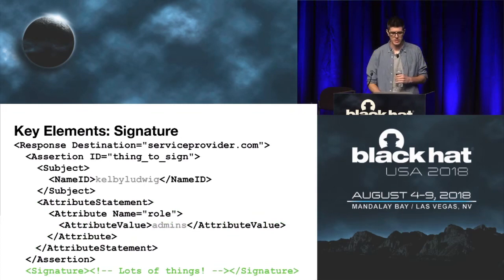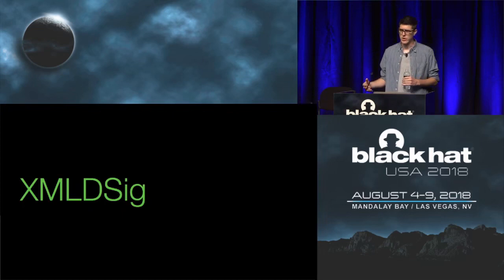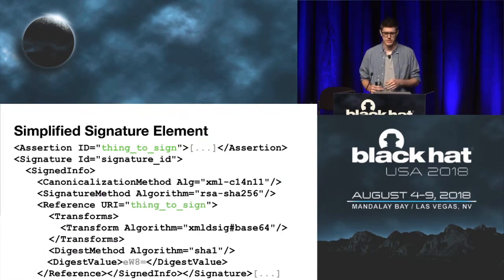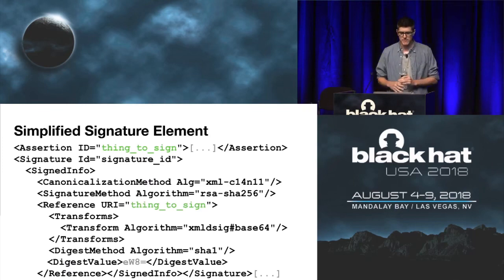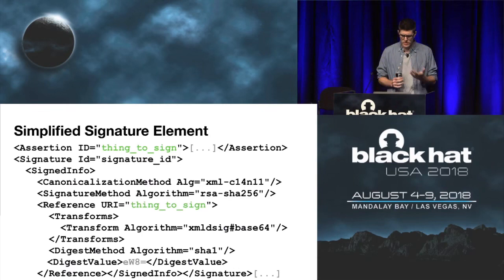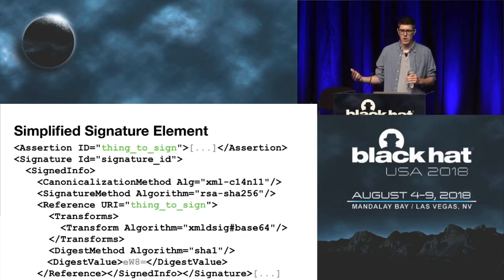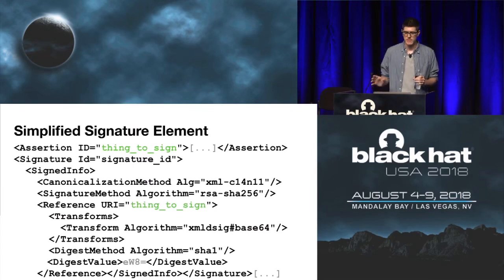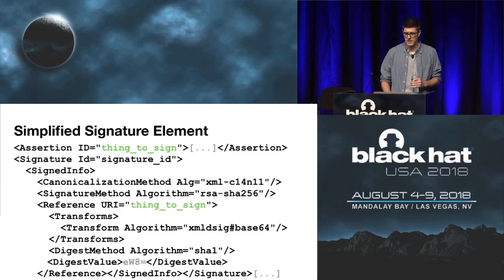Finally, we need a signature to prove that this information wasn't changed by a malicious user, and this is where the signature element and the XML digital signature standard comes into play. SAML uses the XML digital signature standard, often called XML DSig, to sign documents and prevent tampering by potentially malicious user agents. These signatures are included within the SAML messages passed between systems. There's one step of creating XML digital signatures that enables the authentication bypasses I alluded to, so we'll dig into it a bit more.